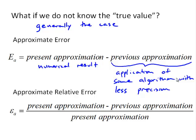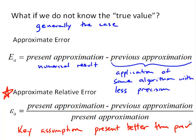Now, again, because approximate error doesn't give us a true sense of the magnitude of an error, it's much more common that we'll use approximate relative error, denoted by epsilon a, and that is given by the present approximation minus the previous approximation, all divided by the present approximation. So again, this is all based off the assumption, the key assumption here, is that the present approximation is better than the previous. So we're basing this measure of error on the assumption that when we apply the same numerical algorithm with more precision, that gives us a better approximation.